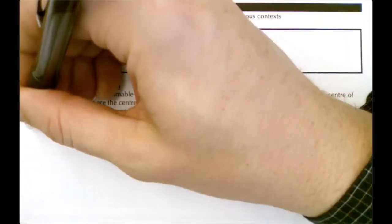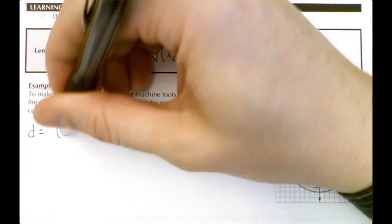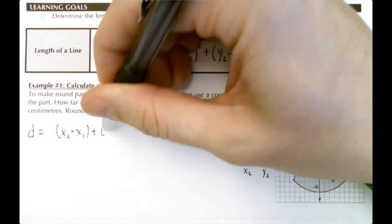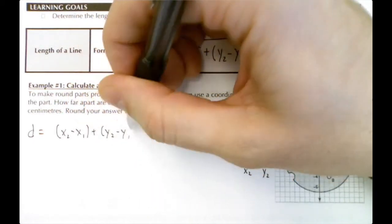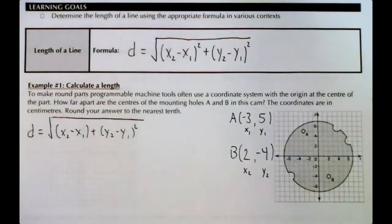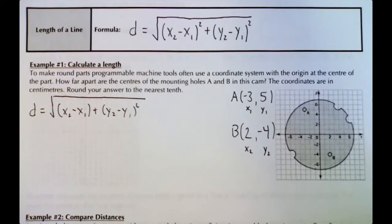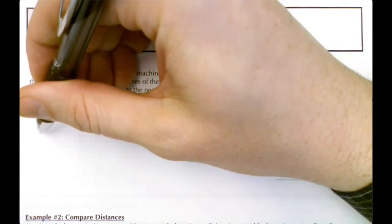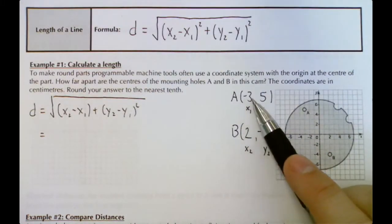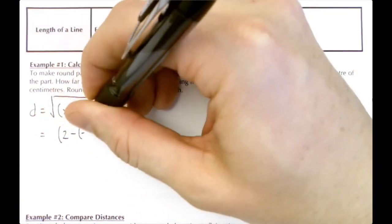Let's use the equation: distance equals square root of (x₂ - x₁)² plus (y₂ - y₁)². Let's replace these variables with the numbers that represent them. x₂ minus x₁ will be 2 subtract -3.